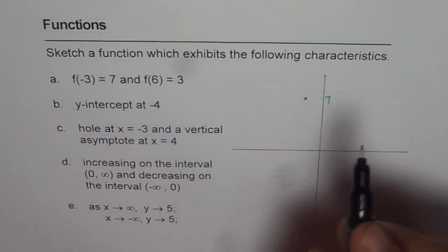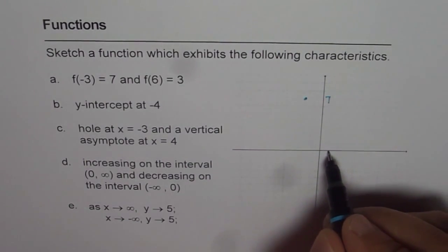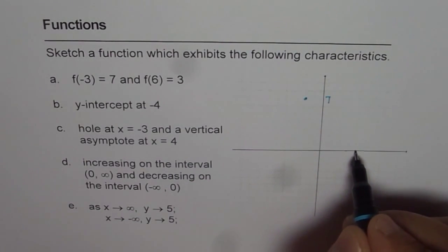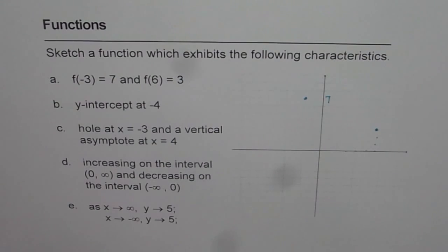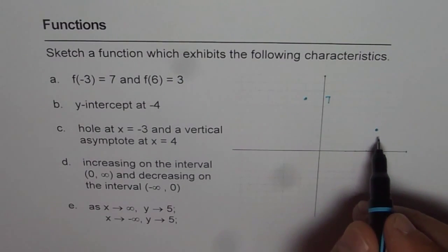f of 6 is 3, so 1, 2, 3, 4, 5, 6, and 1, 2, 3. So this graph paper is kind of blurred out, but anyway, I think I can make out a few points.